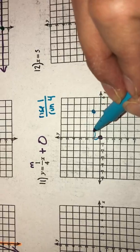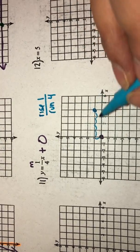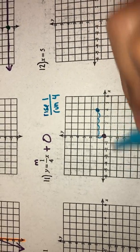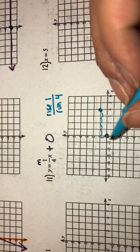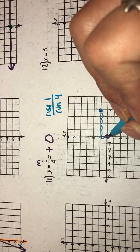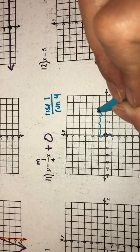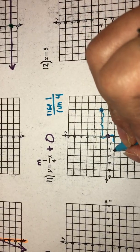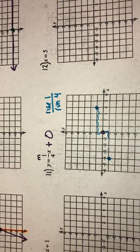So I went up one, one, two, three, four. I'm going to do the same thing, but in the opposite direction. So I don't have to guess where my line's going to land. I'm going to be accurate. So instead of up one, I'm going to go down one. Instead of right four, I'm going to go left four. And there's your line.